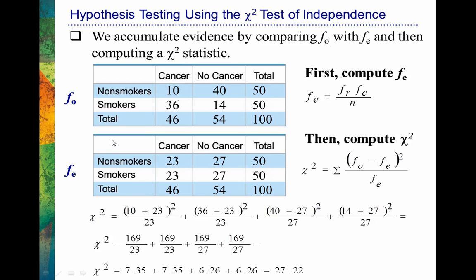Everything we just talked about with correlation applies to the chapter for chi-square, which is Chapter 10. Again, we're talking about new information since exam 2. When it comes to chi-square, we're dealing with relationships between variables, but these are variables that are not quantitative in nature — these are categorical variables. Each person is placed into a category; for example, they are non-smokers who have cancer. There's nothing quantitative about it — this is non-quantitative, often called categorical data. When we have this type of data, we can analyze it to determine if there are relationships using a chi-square analysis.